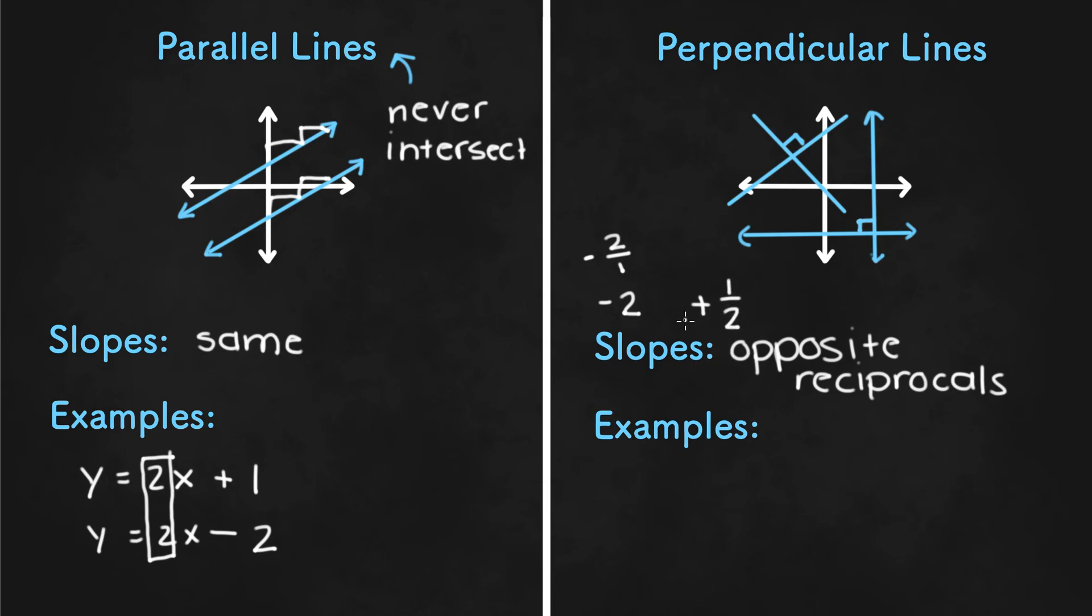So an example of perpendicular lines would be something like y equals 1 third x plus 5 and y equals negative 3x minus 2. So if you notice the slopes here, we have a slope of 1 third and a slope of negative 3. So negative 3 is the opposite reciprocal of 1 third.